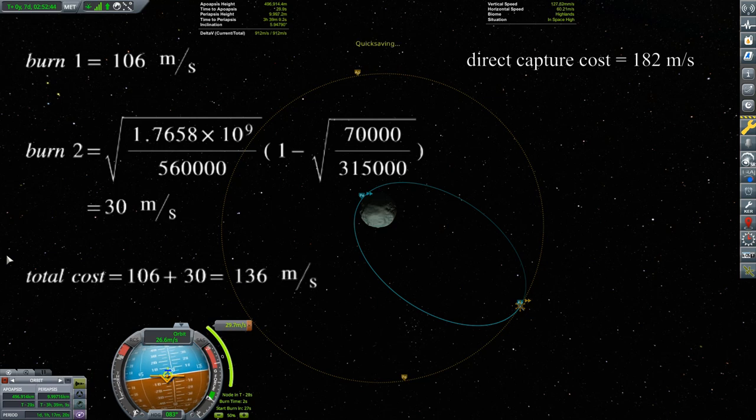This time, 46 meters per second less than the direct capture approach. This time the Oberth effect resulted in a cheaper capture.